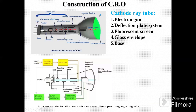See the construction of CRO. This cathode ray tube — see in this image the internal structure of the CRT, cathode ray tube. Now this cathode ray tube is an important part of CRO. This tube consists of an electron gun, deflection plate system, fluorescent screen, glass envelope, and base.